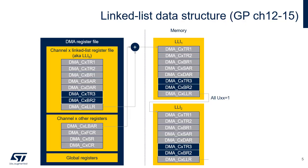This figure describes the link operation when GPDMA channels 12 to 15 are used. These channels support additional functionalities, such as block repetition, interburst offset, and interblock offset, that rely on two registers called CX TR3 and CX BR2. Thus, the LLI size is extended to eight fields.